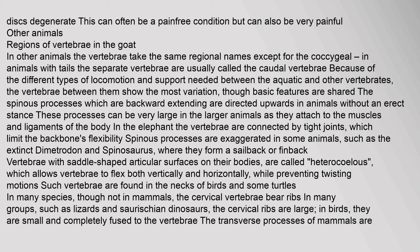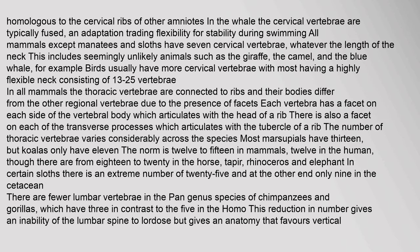In many species, though not in mammals, the cervical vertebrae bear ribs. In many groups, such as lizards and ceratopsian dinosaurs, the cervical ribs are large; in birds, they are small and completely fused to the vertebrae. The transverse processes of mammals are homologous to the cervical ribs of other amniotes. In the whale, the cervical vertebrae are typically fused, an adaptation trading flexibility for stability during swimming. All mammals except manatees and sloths have seven cervical vertebrae whatever the length of the neck — this includes seemingly unlikely animals such as the giraffe, the camel, and the blue whale. Birds usually have more cervical vertebrae, with most having a highly flexible neck consisting of 13–25 vertebrae.